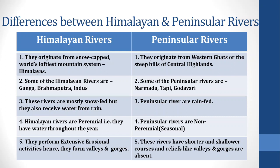Point 5 — Himalayan rivers perform extensive erosional activities; hence they form deep valleys, gorges, etc. Peninsular rivers have shorter and shallower courses, and relief features like valleys and gorges are absent.